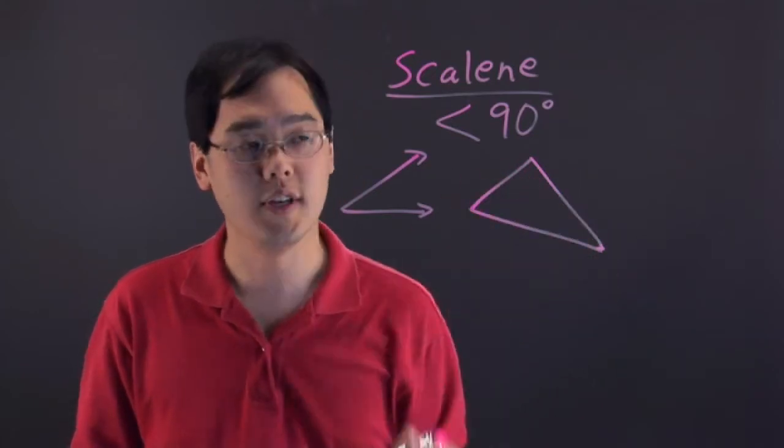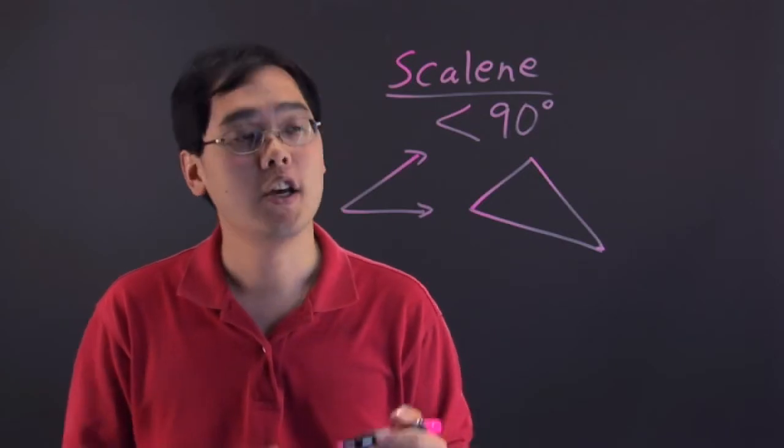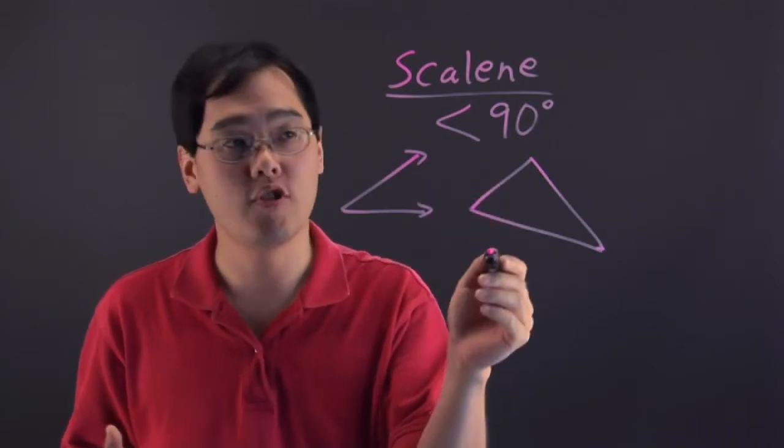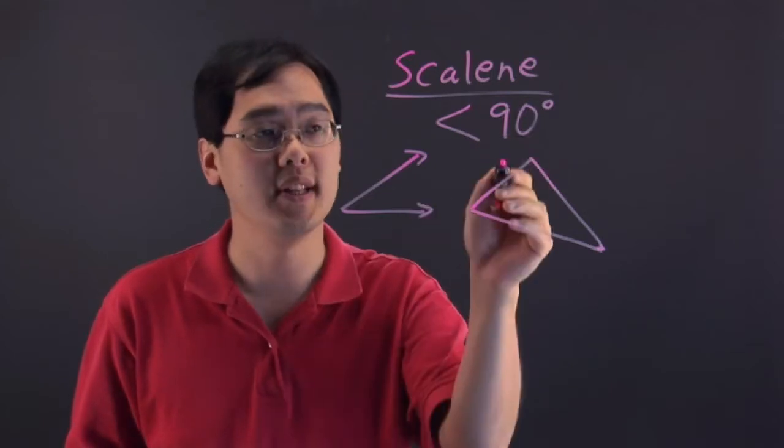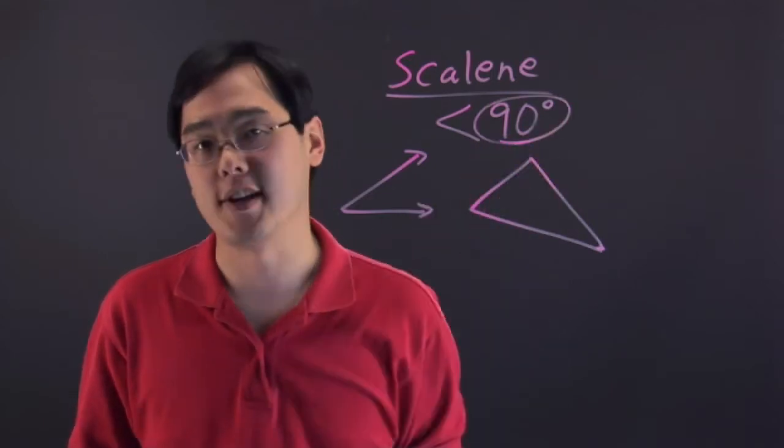Now as you know, all the angles in a triangle have to equal 180, but the important thing to realize is in a scalene triangle, all the angles have to be less than that magic number.